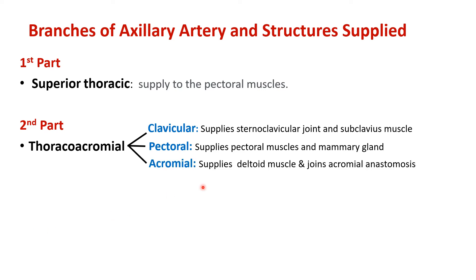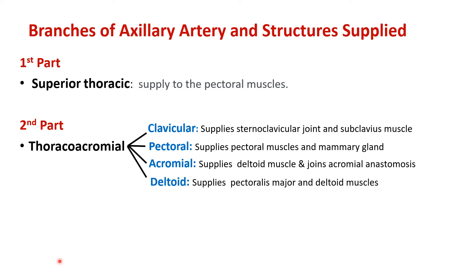The acromial branch of the thoracoacromial artery supplies the deltoid muscle and participates in an arterial anastomosis at the acromion. The deltoid branch supplies the deltoid muscle and the pectoralis major, passing along the deltopectoral groove. So the four branches of the thoracoacromial artery are: clavicular, pectoral, acromial, and deltoid.